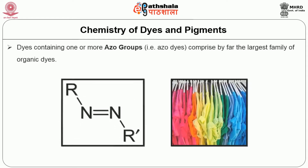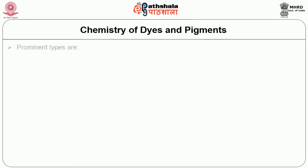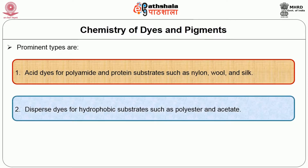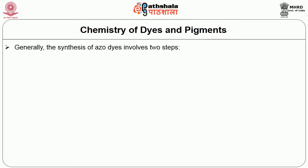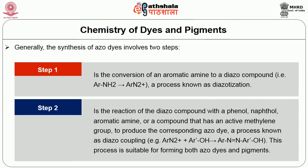The chemistry of dyes and pigments. Dyes containing one or more azo groups comprise by far the largest family of organic dyes. Prominent types are acid dyes for polyamide and protein substrates such as nylon, wool, and silk; disperse dyes for hydrophobic textile materials such as polyester and acetate; and direct and reactive dyes for cellulosic textile materials such as cotton, rayon, linen, and paper. Generally, the synthesis of azo dyes involves two steps: first, conversion of an aromatic amine to a diazo compound, known as diazotization; and second, the reaction of diazo compounds with phenol, naphthol, aromatic amine, or a compound with an active methylene group to produce the corresponding azo dyes — a process known as diazo coupling.